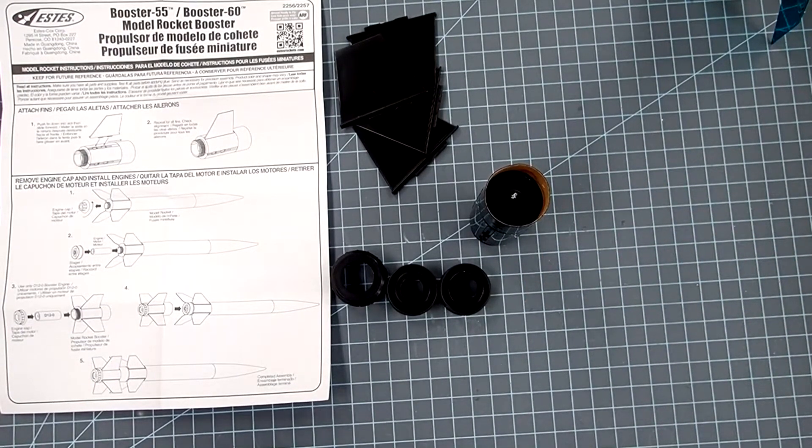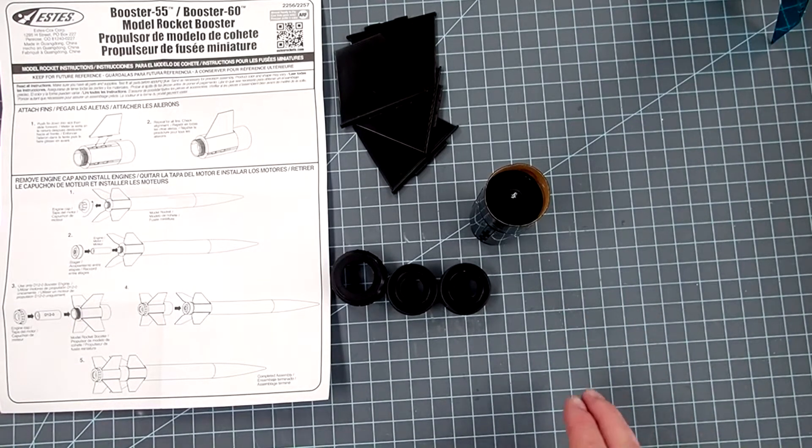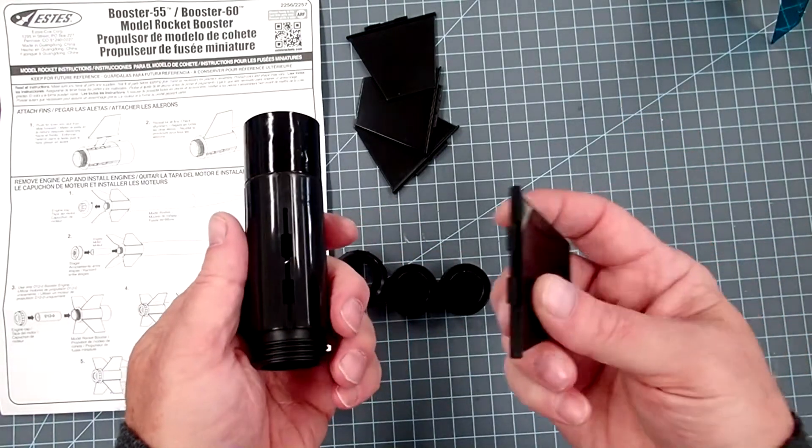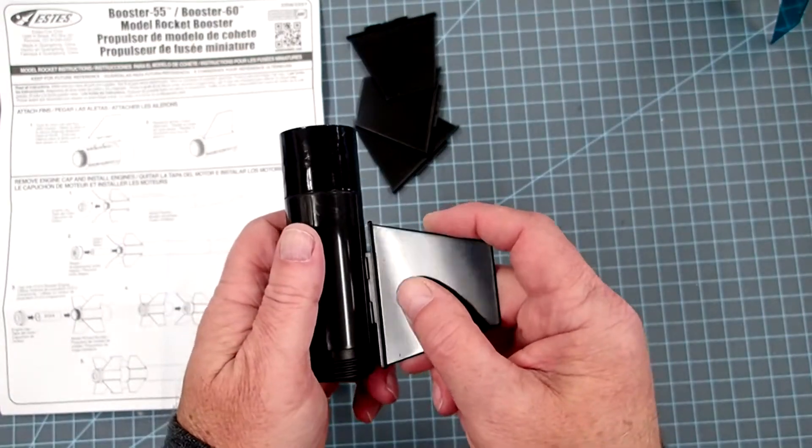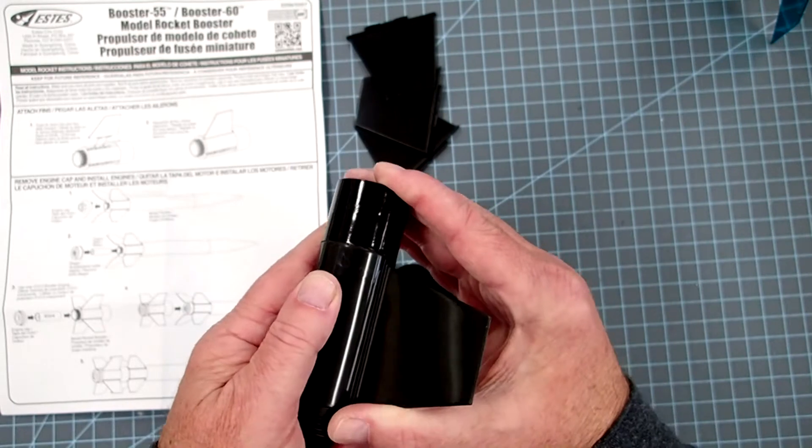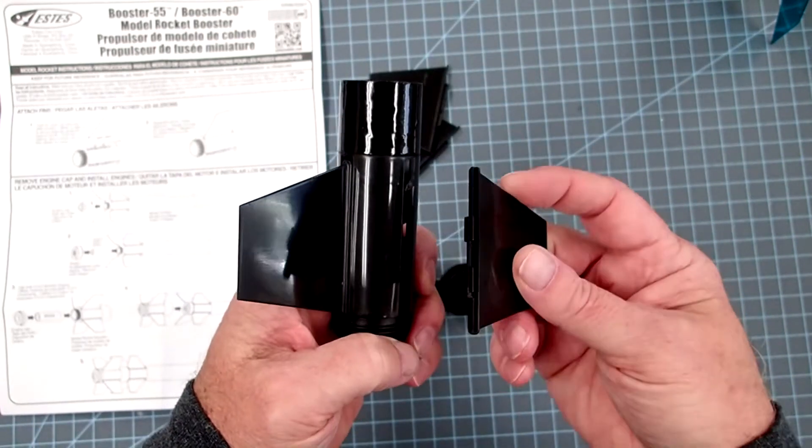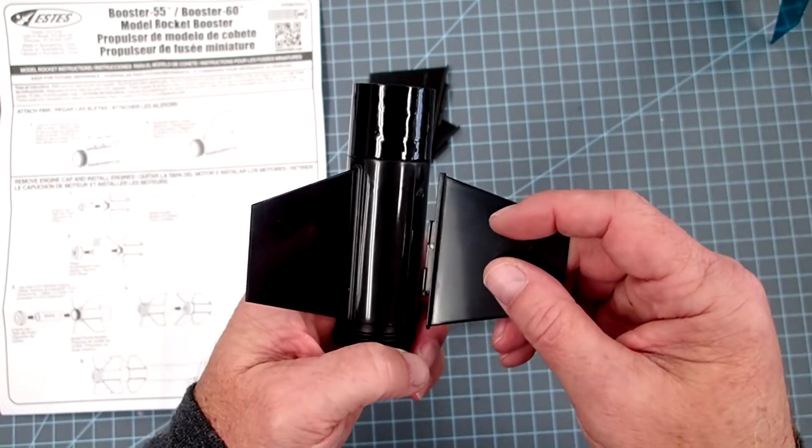Now if you've ever built any of the ARF series of rockets, this is going to seem really familiar. So we're going to simply glue on some fins here and I'm just going to dry fit these, make sure they all fit. Okay, and they have through the wall fin mounts and they lock into place.